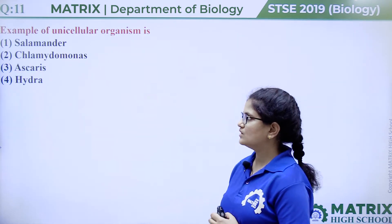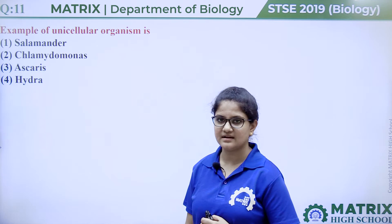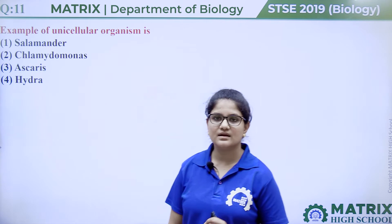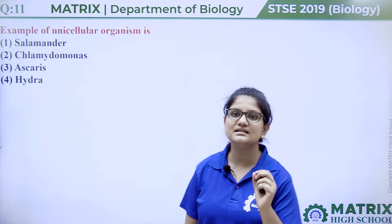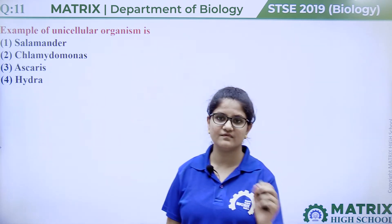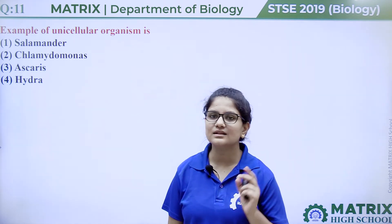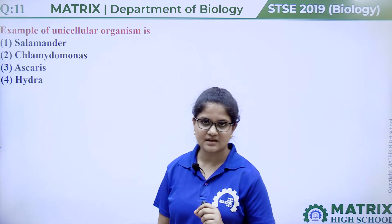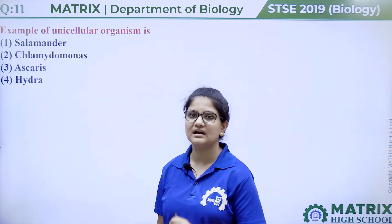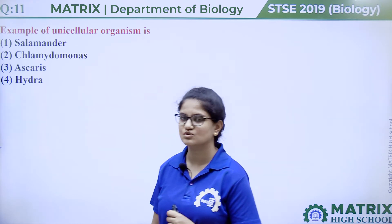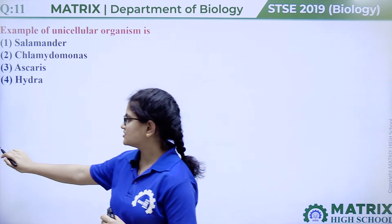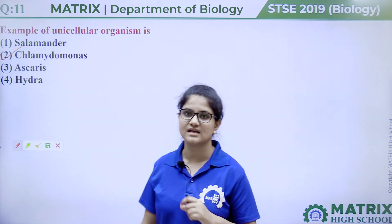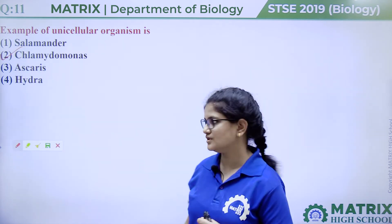Question number eleven: an example of a unicellular organism is salamander, Chlamydomonas, Ascaris, or Hydra. Unicellular means a single-celled organism that performs all body functions with one cell. Salamander, Ascaris, and Hydra are all multicellular. But Chlamydomonas is a single-celled organism. So the answer is option two, Chlamydomonas.